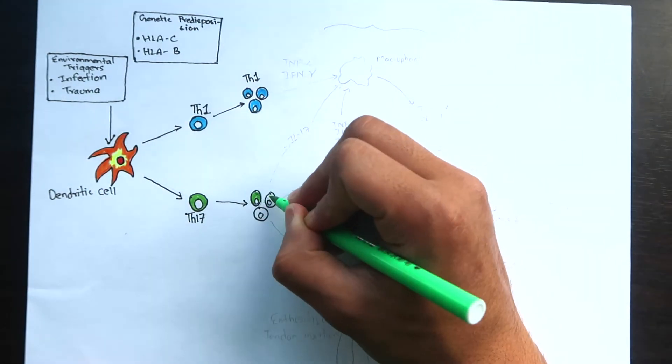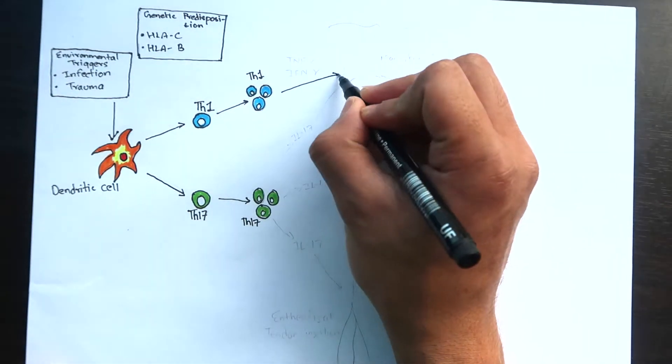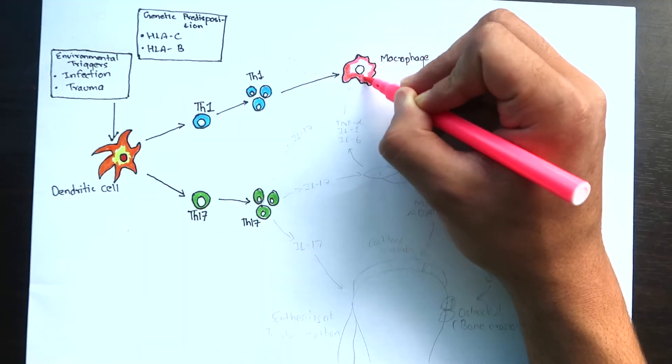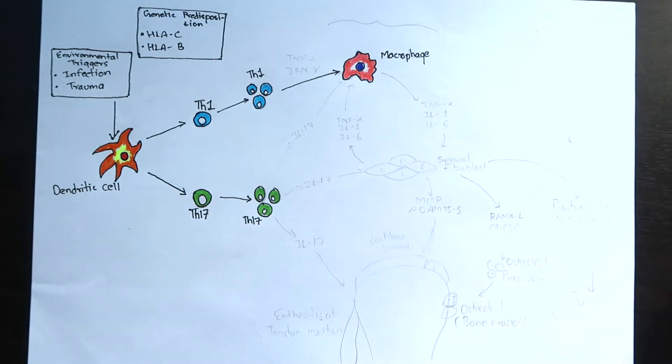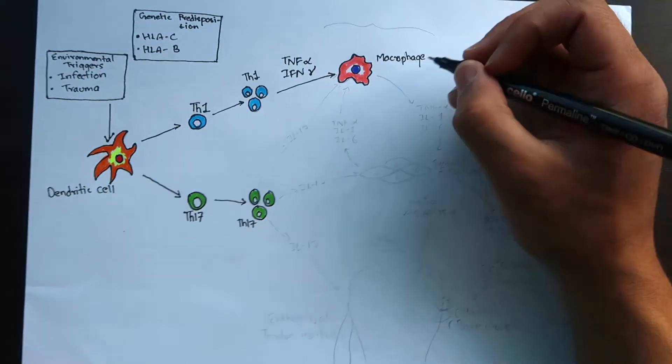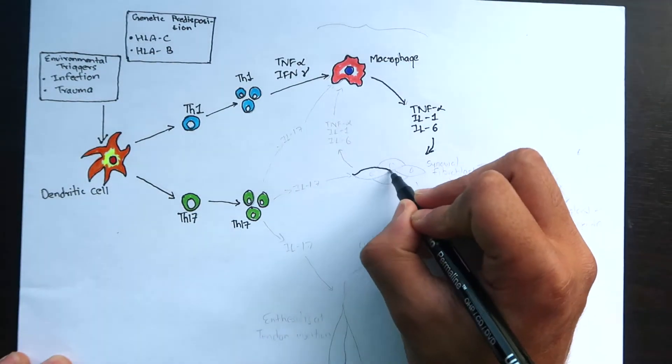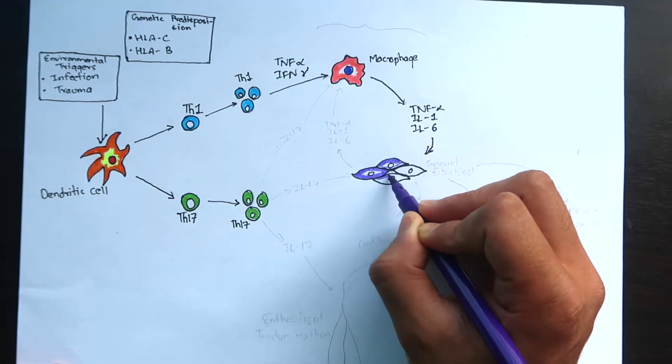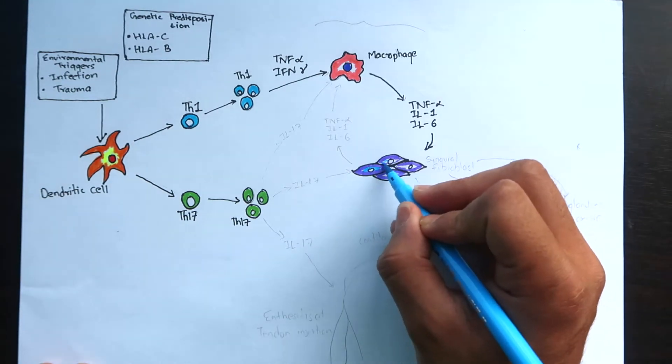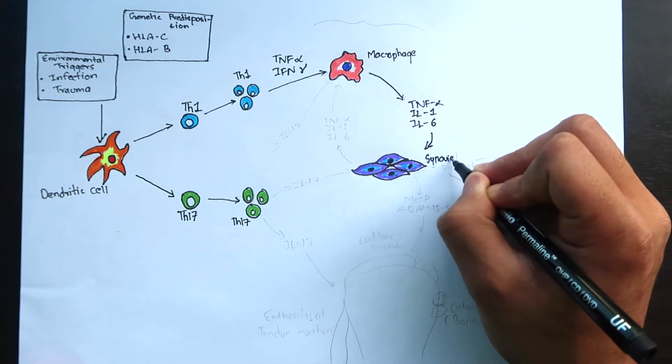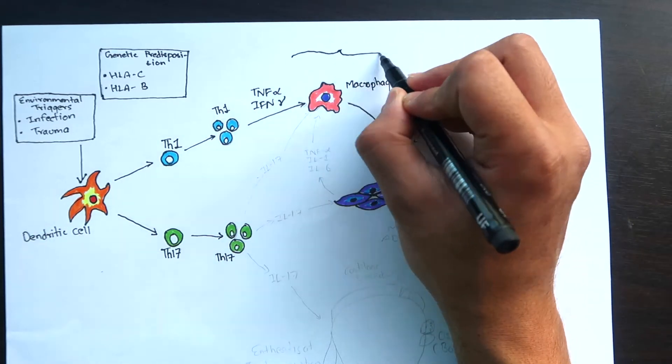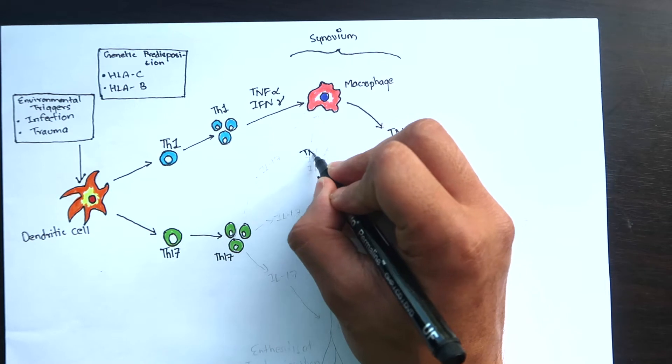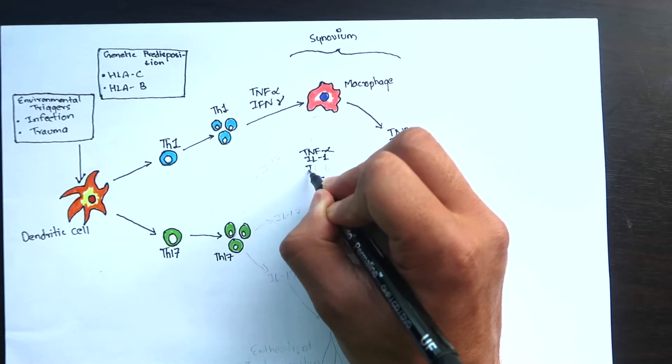T helper 1 activates the macrophages of the synovium by producing TNF-alpha and interferon gamma. Macrophages will also produce TNF-alpha, interleukin-1 and interleukin-6 to activate the synovial fibroblasts. Synovial fibroblasts can again produce the same cytokines that will again activate macrophages, so a positive cycle is seen here.